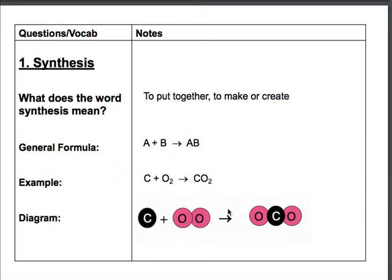The example here would be C, which is carbon, plus O2, which is oxygen, yields carbon dioxide, right here. And then the diagram shows you in a visual way how that all comes together. So you've got your one carbon atom, you've got your two oxygen atoms, and they come together to produce carbon dioxide.